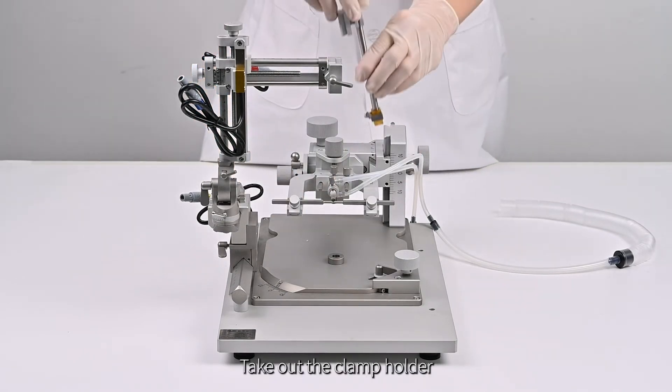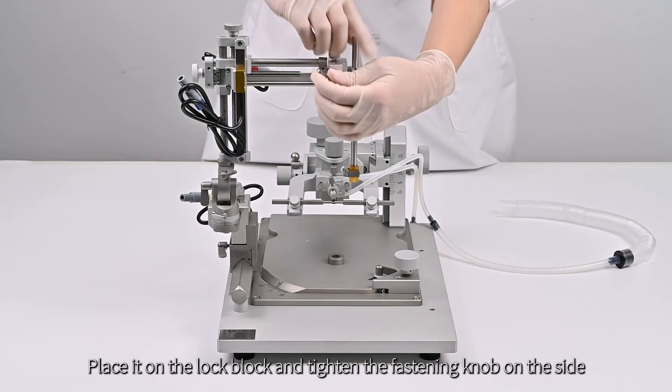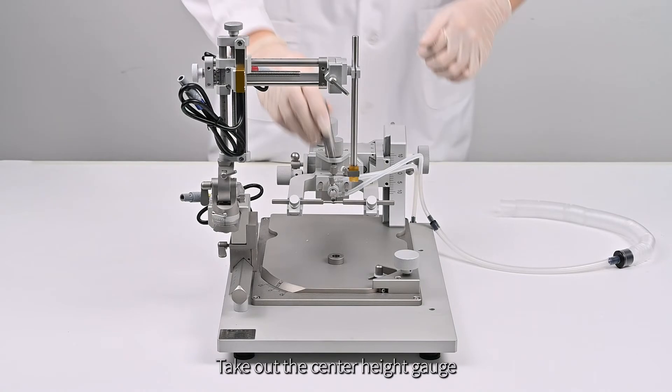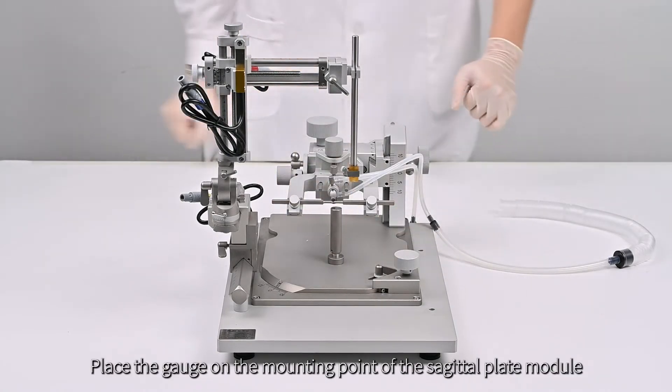Take out the clamp holder. Place it on the lock block, and tighten the fastening knob on the side. Take out the center height gauge. Place the gauge on the mounting point of the sagittal plate module.